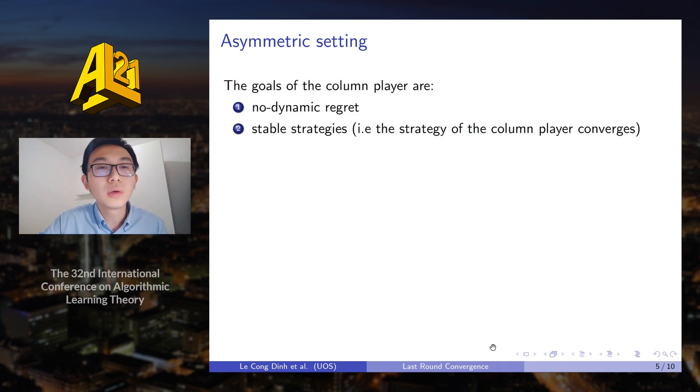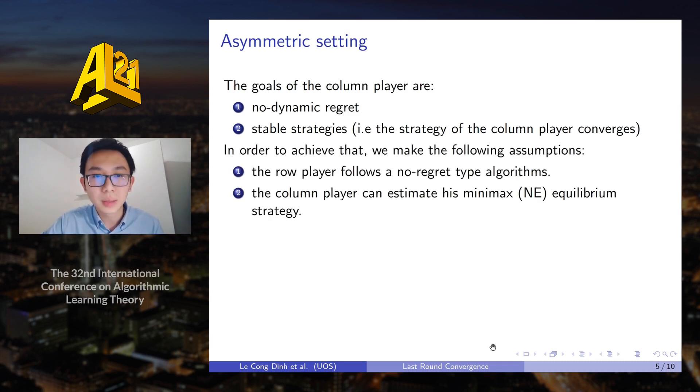So in order to achieve these goals, we need to make two assumptions. The first one is that the row player will follow a no regret type algorithm. This assumption is common and very easy to justify, because in the situation when the row player doesn't have any more information about the game or doesn't know what type of algorithm the column player can use, then following a no regret algorithm will guarantee the best performance that he can have.